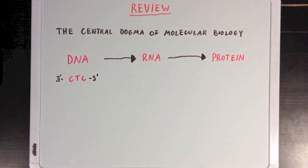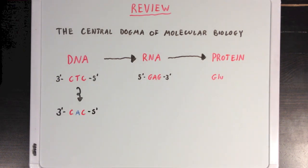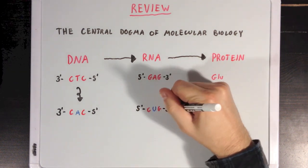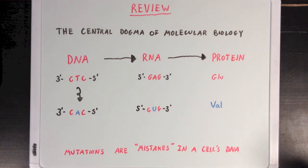Nucleotides from the DNA are transcribed to their complementary forms on RNA, which are then read as codons, or groups of three, to code for specific amino acids in a larger protein. Now, if you mutate one of the nucleotides on DNA — like turning this thymine base into an adenine base — that will affect the RNA sequence and ultimately the protein that follows. So we say that mutations are mistakes in a cell's DNA that ultimately lead to abnormal protein production.